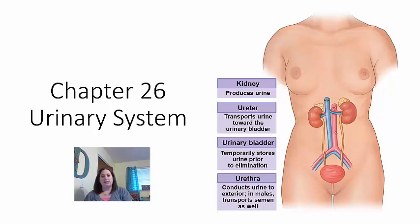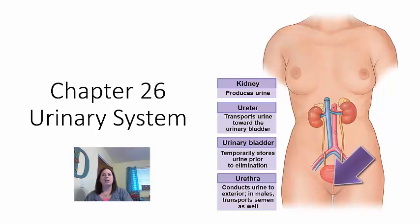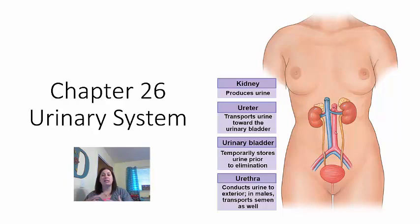With the urinary system, you can see in the diagram there are a number of structures. You have your kidneys, which is the functional structure that actually creates the urine. You then have the ureter, which transports the urine to the bladder. The bladder stores the urine temporarily, and then the urethra is the tube that releases the urine to the outside. The only main structure that actually cleans and filters the blood is the kidney itself.